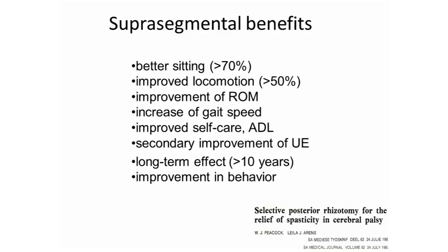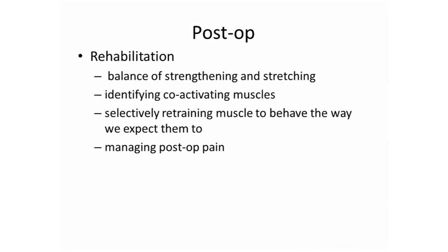There are supersegmental benefits to this surgery beyond reducing tone in the lower extremities. The child can sit better, with improved locomotion, better range of movement, and increased gait speed. It becomes easier to perform self-care and ADLs using the upper extremities because spasticity is reduced. There are secondary improvements in upper extremity function, long-term effects lasting greater than 10 years, and improved behavior. Post-operatively, we work on balancing, stretching, and strengthening, identifying co-activating muscles, selectively retraining muscles, and addressing neuropathic pain.